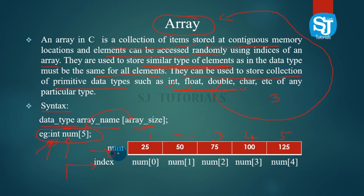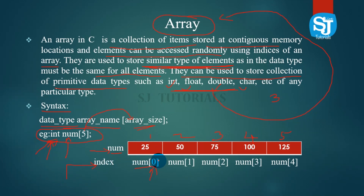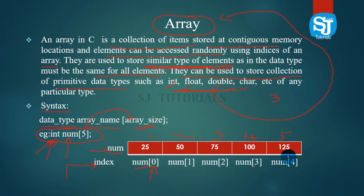The starting index is 0. So index 0 holds the first value, index 1 holds the second, index 2 holds the third, index 3 holds the fourth, and index 4 holds the fifth value.